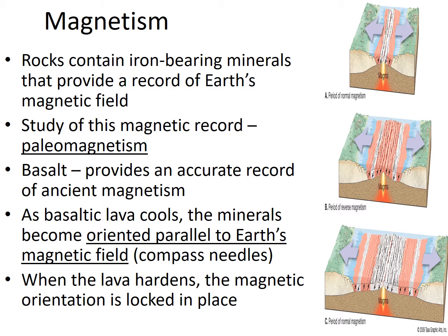Basalt provides an accurate record of ancient magnetism. As basaltic lava cools, the minerals become oriented parallel to the Earth's magnetic field, like compass needles. The compass needle within the rock aligns in the direction of the magnetic field. Right now the magnetic field is oriented towards the North Pole, but that has not always been true. It switches every couple thousand years, but once that basalt hardens, that magnetic orientation can no longer move, giving us a record of how the Earth's magnetism has changed over time and showing that the ocean floor or rift valley is growing.